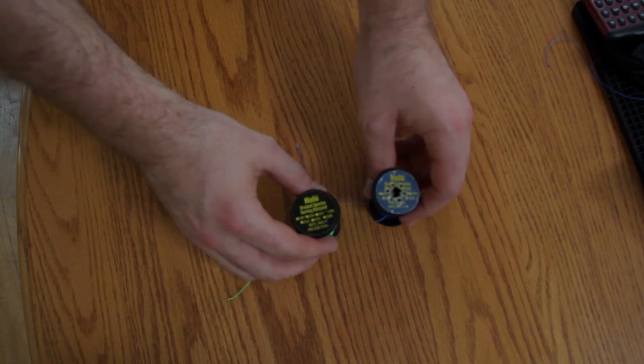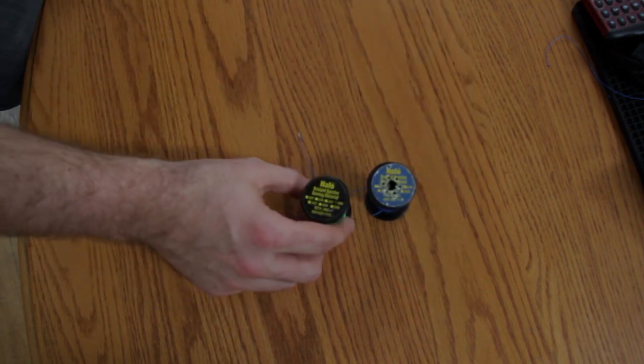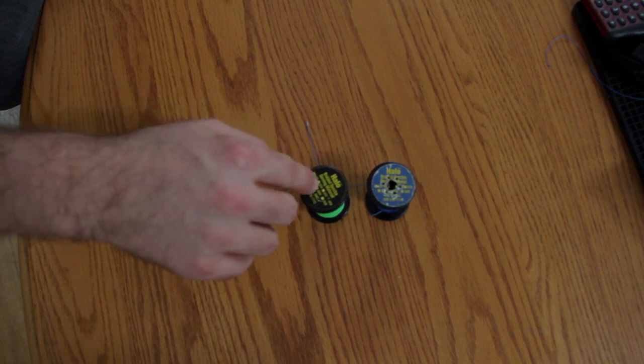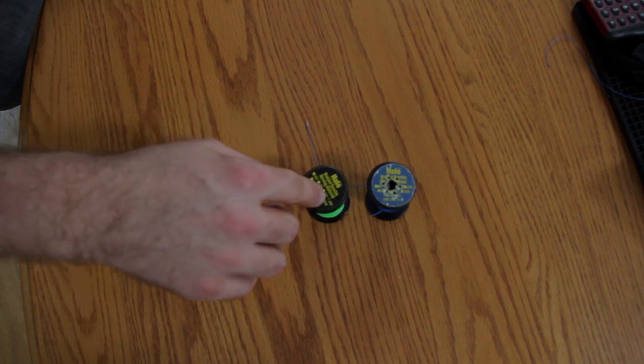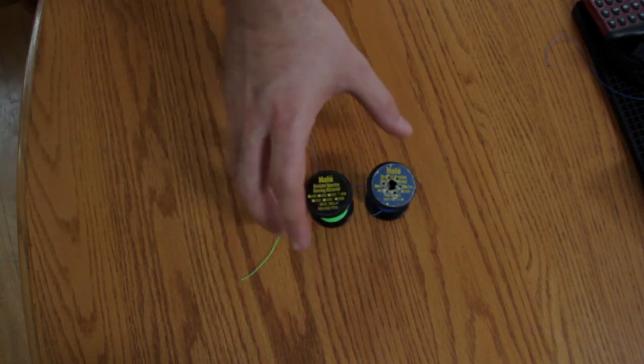So here is what you're going to need. Besides a bow that is strung, you will need some halo serve. You want the range to be between .014 and .019. Any color is acceptable.